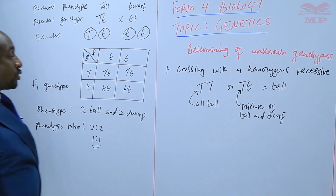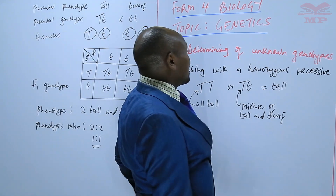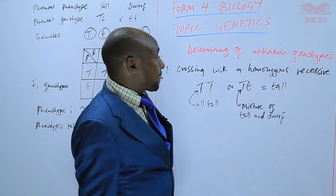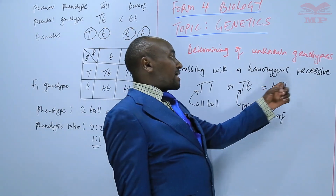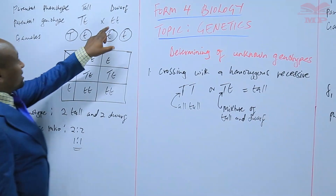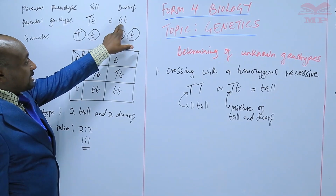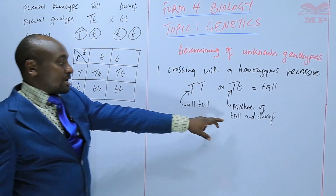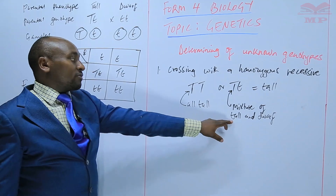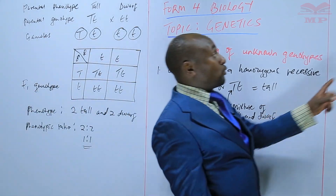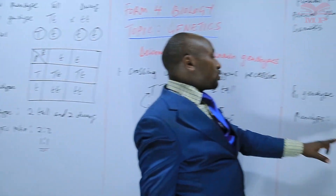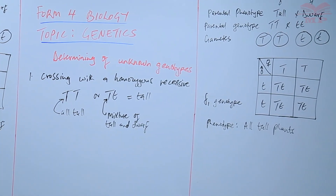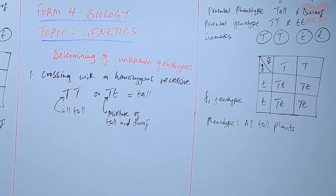So that is what we have confirmed: when determining an unknown genotype, we can do a crossing with a homozygous recessive. If the genotype was heterozygous, we get a mixture of tall and dwarf. But if the genotype was homozygous, we get only tall plants. That is one way of determining an unknown genotype.